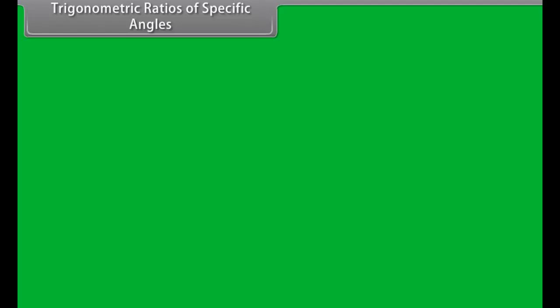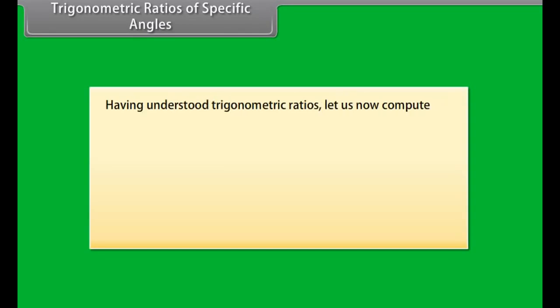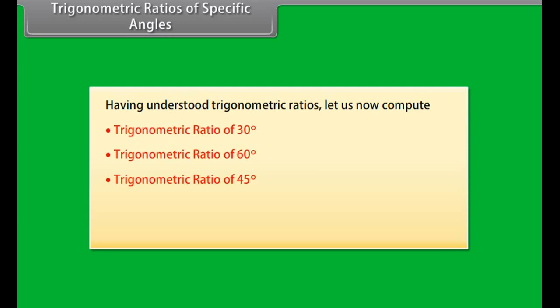Trigonometric ratios of specific angles. Having understood trigonometric ratios, let us now compute the trigonometric ratios of 30 degrees, 60 degrees, 45 degrees, 0 degrees, and 90 degrees.